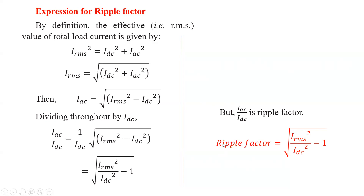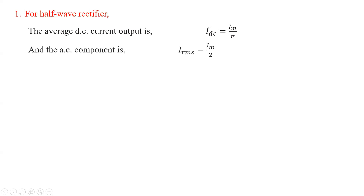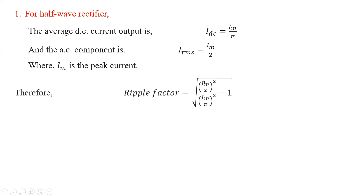Let us calculate the ripple factor for the half wave rectifier. The average DC output current for the half wave rectifier is I_dc = I_m / π, where I_m is the peak current, since only half the cycle is converted to DC. The RMS value of the output current is I_rms = I_m / 2. Now substitute these into the ripple factor formula: γ = √(I_rms² / I_dc² − 1).